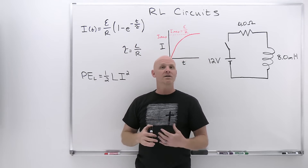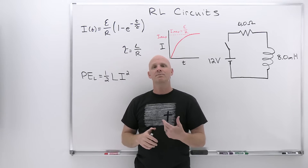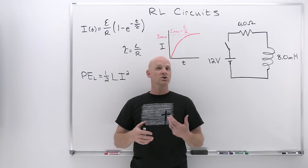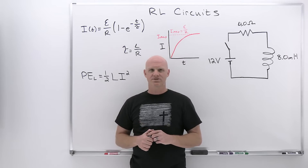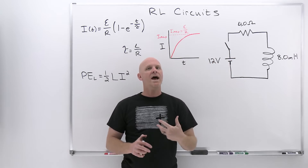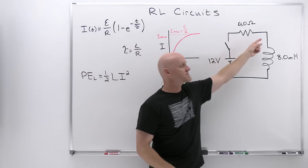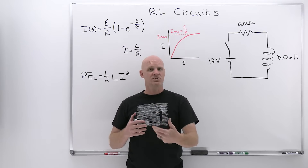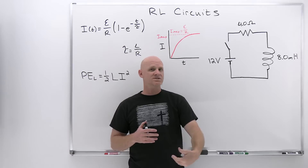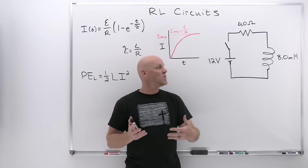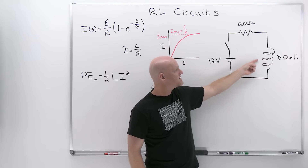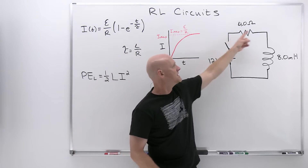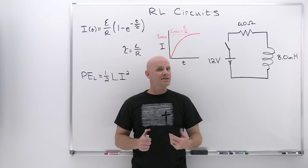One thing to note: we're going to have bonafide inductors in our circuits in this chapter. When you have a bonafide inductor in your circuit, you ignore any self-inductance due to the loop shape of the wire — similar to how when you have an actual resistor in a circuit, we ignore any resistance contributed by the wires themselves. When there are actual resistors present, we assume their resistance is much higher than any resistance in the wires. The same logic applies here with inductors.